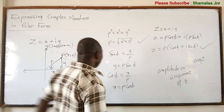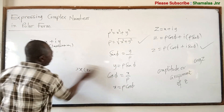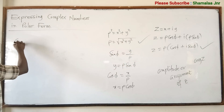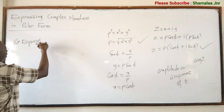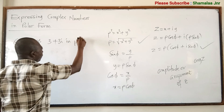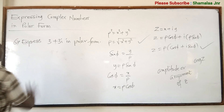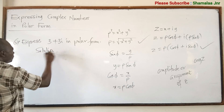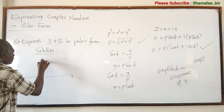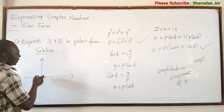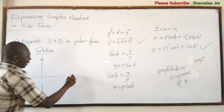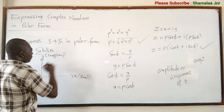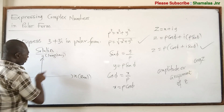Let's look at a specific question. Express 3 plus 3i in polar form. To solve this, first draw your complex plane — the x-axis is the real part and the y-axis is the imaginary part. The real part is 3, so you go to 3 on the x-axis, and the imaginary part is also 3.